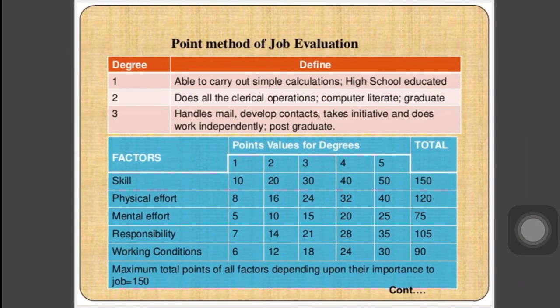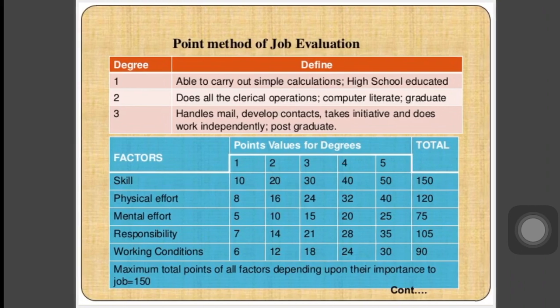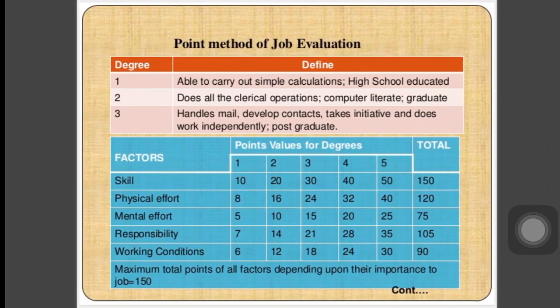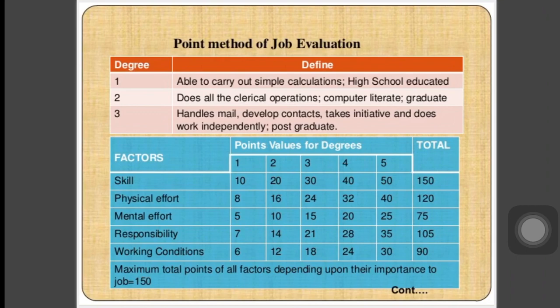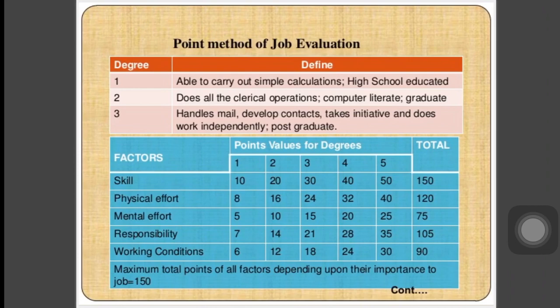For example, with factors such as skill, physical effort, mental effort, responsibilities, and working conditions, suppose there are 5 jobs. Points are assigned to each — for skill, job 1 needs 10, job 2 needs 20, job 3 needs 30, job 4 needs 40, and job 5 needs 50. The total points across all factors are calculated, and the job with the highest total gets the highest wage structure.